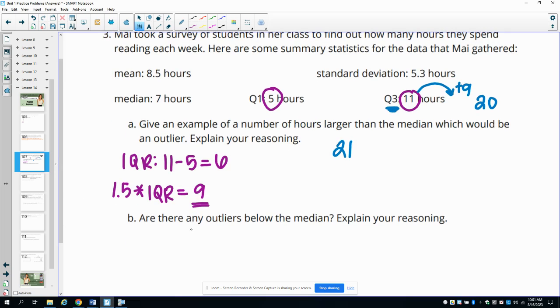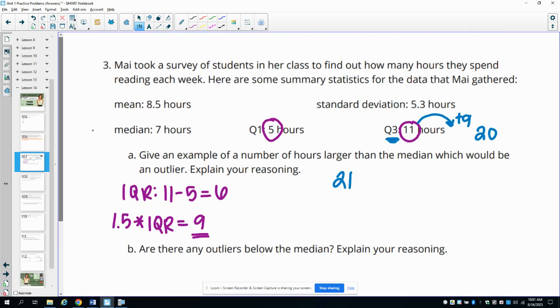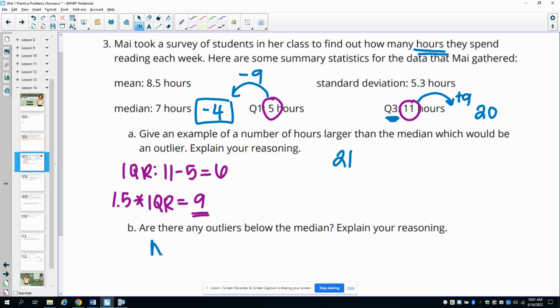Part B says are there any outliers below the median? Below the median would mean it would have to go from Q1 and subtract 9, so 9 below, which would give us a data point of negative 4. This is how many hours students spent reading each week, and you can't read negative hours. So no, because negative hours don't make sense in this data or in this context.